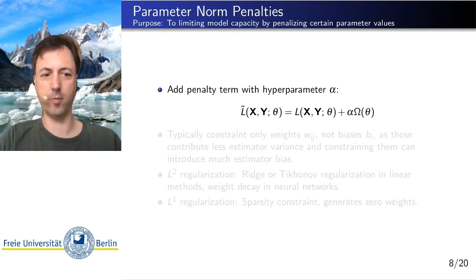A very common form of regularization is to use some penalty on the parameters that are being learned. So parameter norm penalties. The idea is we have a loss function, an unmodified loss function, which somehow describes, for example, a reconstruction error, a classification error, a negative log likelihood,